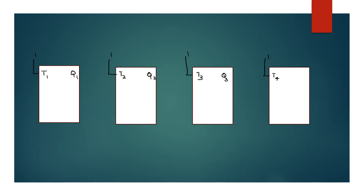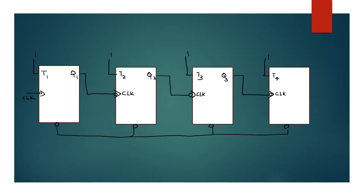In the case of ripple counters, we apply the clock to Q1. The output of Q1 drives the clock of the next stage Q2, and so on — each flip-flop's output serves as the clock input for the next.